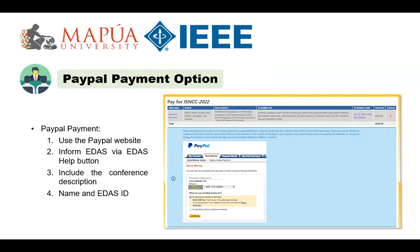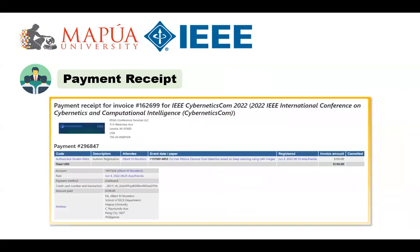You may be wondering what payment option I used when I presented. I used the credit card payment option — it's very convenient. Once the payment has been processed and confirmed, you will receive an email receipt of the registration. And this is how it looks like on the EDAS page.